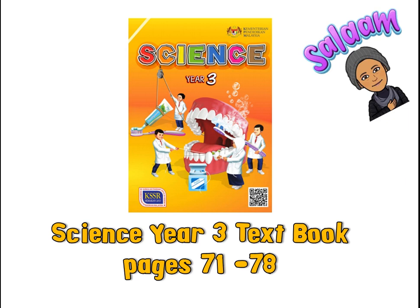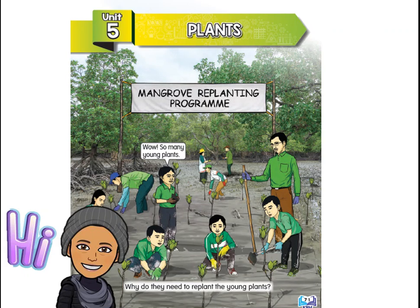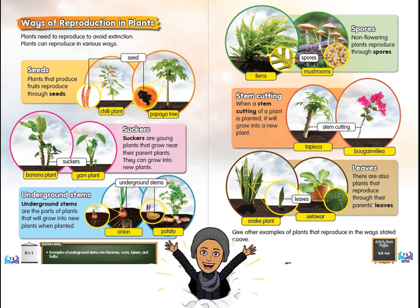For today's assignment, I just need you to refer back to the topic that we have learned and discussed before — the topic about plants. So you need to take your science textbook and open to page 71. Let's go. I hope you remembered what we discussed about this stimulus page.